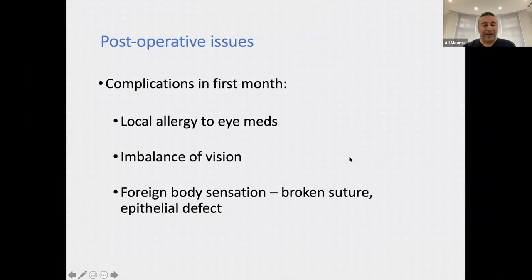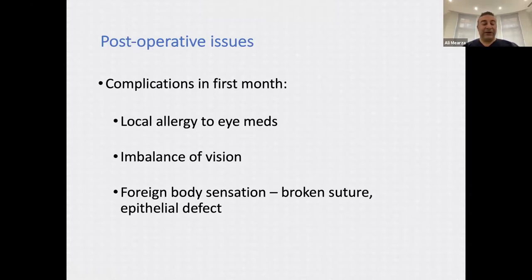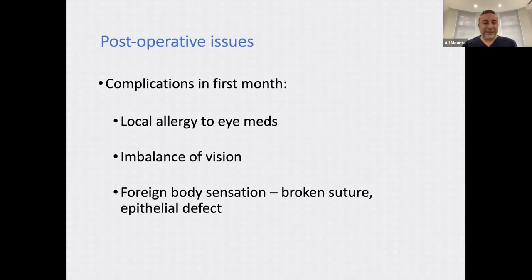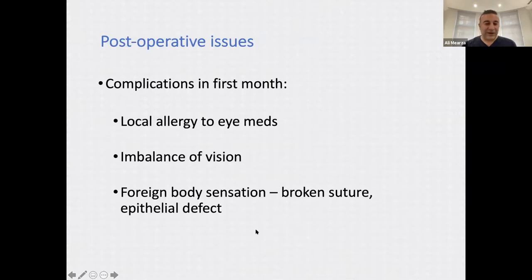Complications in the first month include local allergy to eye medication, particularly preservative allergy causing irritation and redness. Dry eye may become more symptomatic — switching to preservative-free medication solves this. Imbalance of vision can occur in patients with very high prescriptions who've had one eye done — this is called anisometropia and the other eye will need to be treated fairly soon. Foreign body sensation from a broken suture or epithelial defect is another thing to look out for.